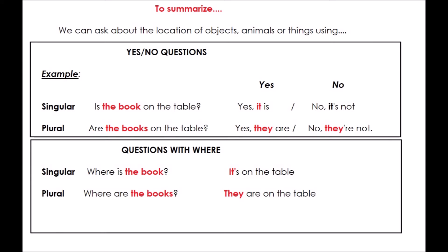So, summarizing. To ask for the location of things, we have yes/no questions. And for singular, we have, is the book on the table? Yes, it is. Or, no, it's not. Or, in plural cases, are the books on the table? Yes, they are. No, they are not. Or, you can use questions with where. Where is the book? It's on the table. And, where are the books? They are on the table.